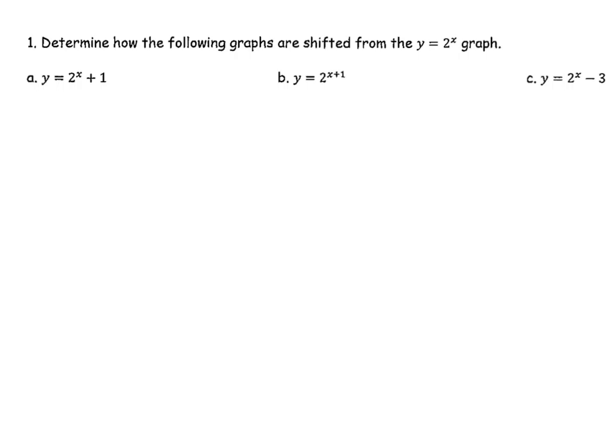Let's talk about the first few. There's nothing after the x, but this plus one — that's my k. K means it moves up or down. So if this is the parent function with a y-intercept of one, when it has a plus one at the end, it's going to shift up one. There's no number after x, so it won't go left or right.